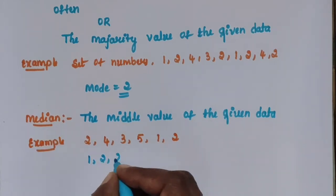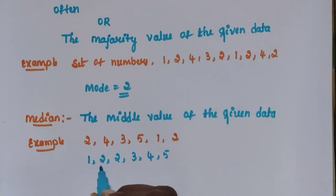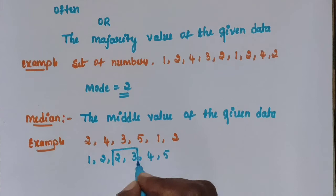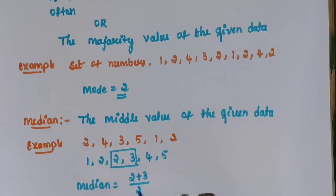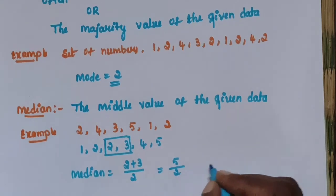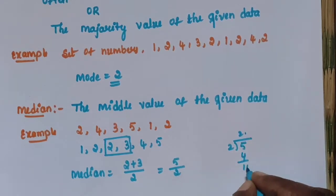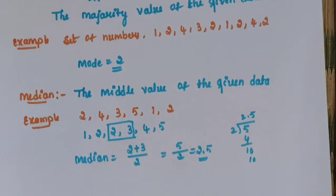Arrange: 1, 2, 2, 3, 4, 5. There are 6 numbers. Then 2 and 3 are the middle values. Median is equal to (2 + 3) divided by 2. That is 5 divided by 2, which equals 2.5. So the median is 2.5.